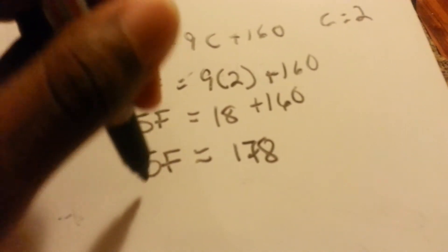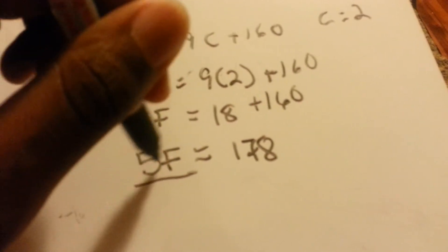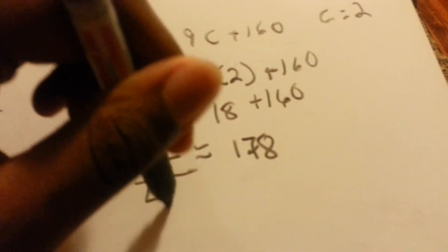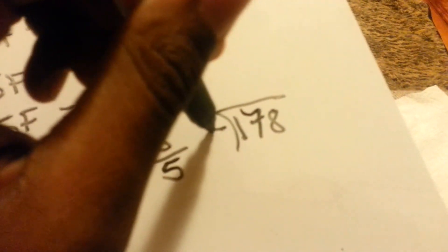And then you get F alone. You divide by 5. Since you're multiplying there, you divide by 5. Get rid of that. And then you divide by 5 over here. You got 178 divided by 5.